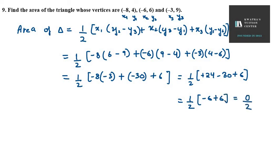So you get 0 over 2, and 0 over 2 can be written as 0. So the area of the triangle here is 0 square units. This is your answer for question number 9.